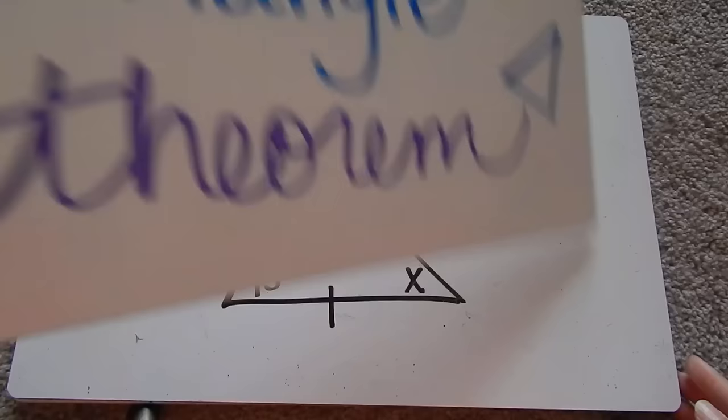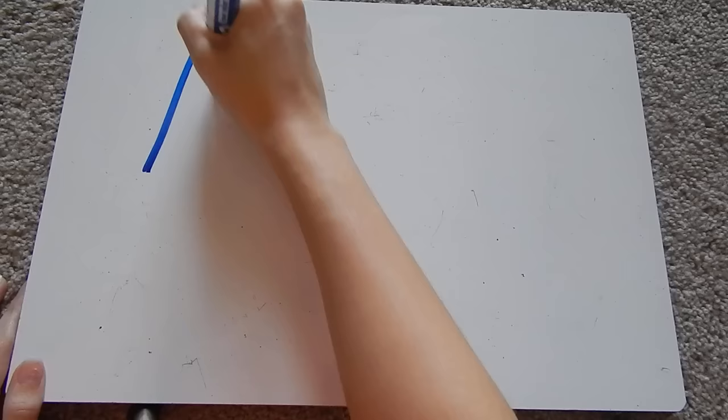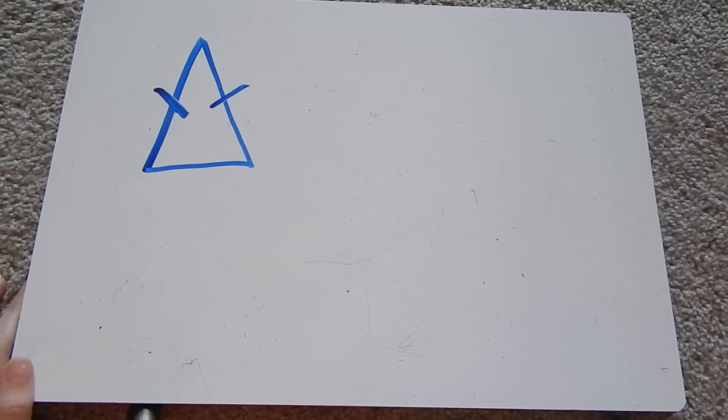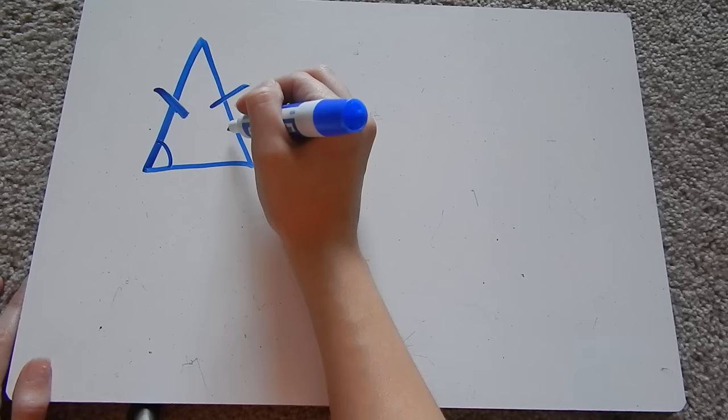These are two different theorems, but they are very similar. So let's first, before we start an example, go into what these theorems are. The isosceles triangle theorem states, and if you remember, an isosceles triangle has two equal sides.